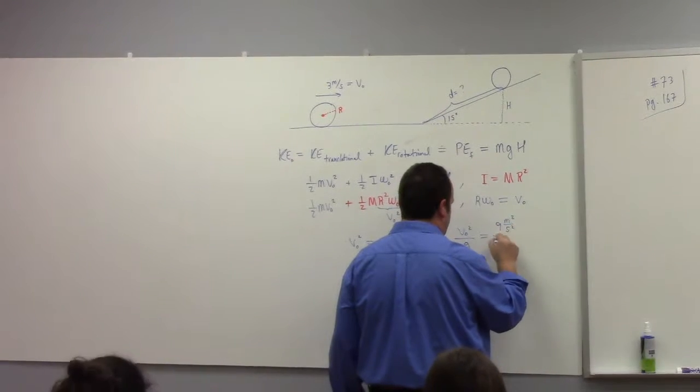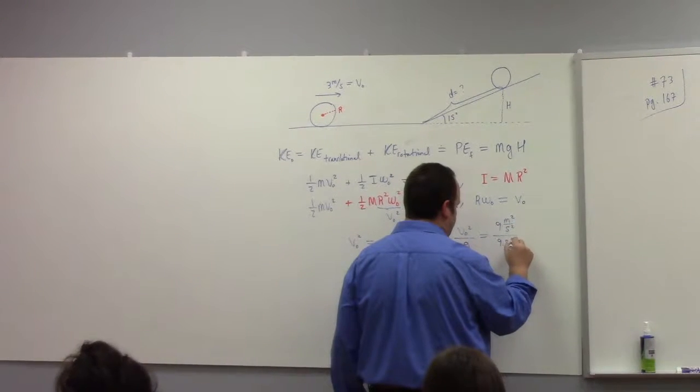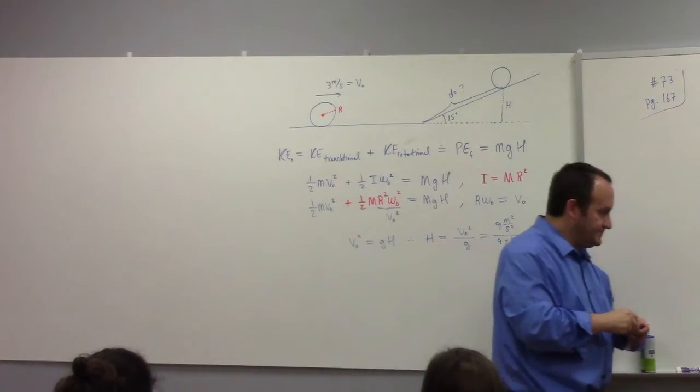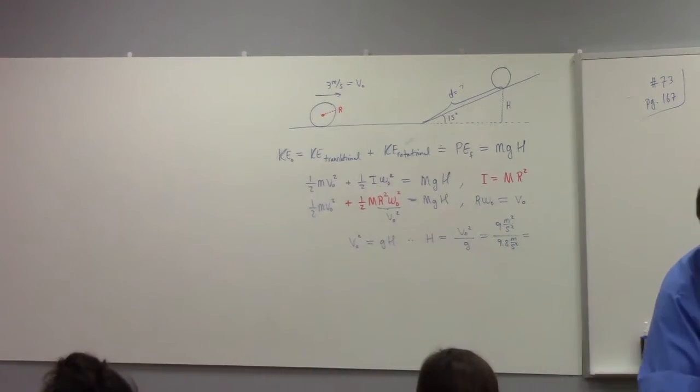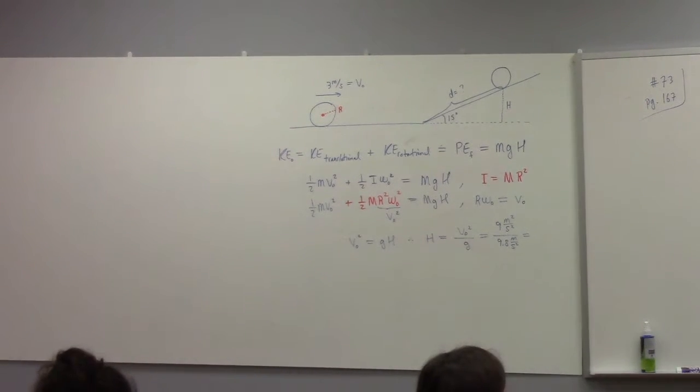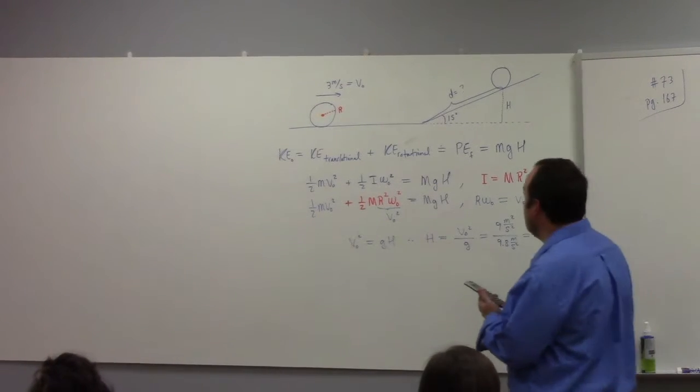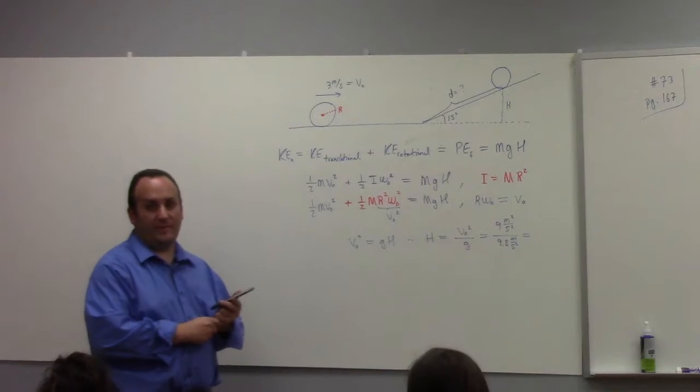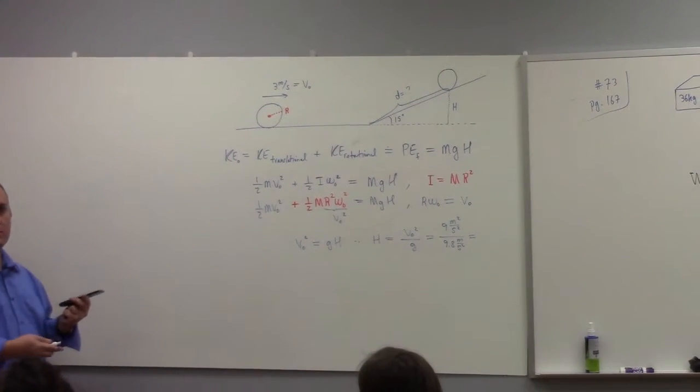meters squared per second squared divided by 9.8 meters per second squared, which gives me whatever that is. It seems like at the start that you don't have enough information, right? Seems like they should have to tell you what at least what r is, and maybe also what the mass is, but no, we don't need to know either to solve this problem.